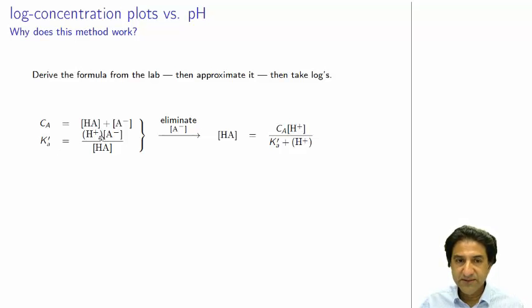Plus we have a K constant condition. In this case, it's a mixed constant. We're using the H plus activity along with the A minus concentration divided by the total HA concentration. So it's a mixed constant, but this is neither here nor there. We can combine these two equations. We can eliminate A minus, plug this equation into this equation.